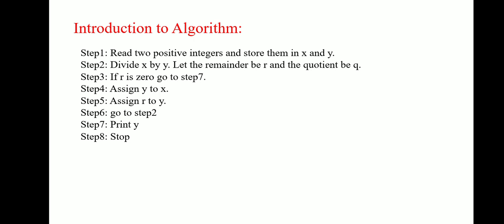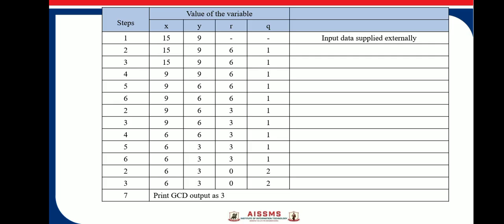Now, let us consider this example where value X and Y are 15 and 9. First step is, find out, assign first number as X, another number as Y. Then, step 2.